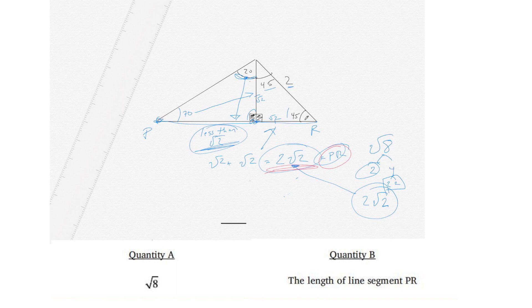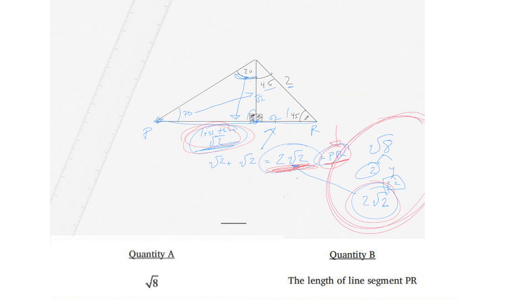And we know that PR is something a little bit, like we said here because this is less than that. So we know PR is something less than 2 times the square root of 2. And they're asking us what's bigger. PR, which is less than 2 times the square root of 2, compared to square root of 8, which is 2 times the square root of 2. Because that's less than, then we know that square root of 8 is bigger than PR.